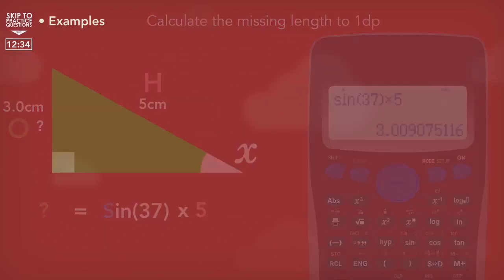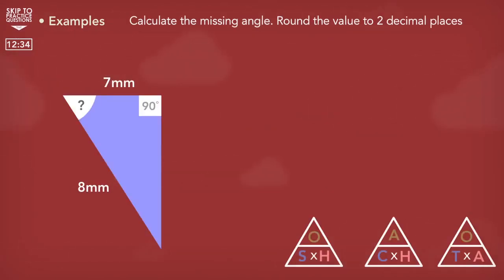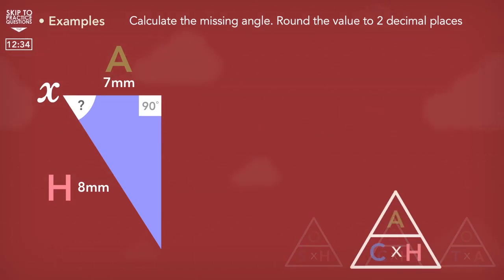Here's another example. Label the triangle again. Since this side is next to the unknown angle and it is not the hypotenuse, then we know that it's the adjacent and it has a length of seven millimeters. This side is the longest and opposite the right angle. Therefore, it's the hypotenuse and it has a length of eight millimeters. The equation that we use has an adjacent and the hypotenuse, so we're going to need cos.